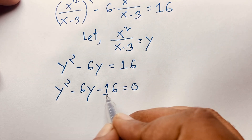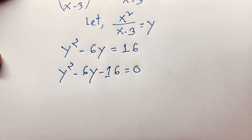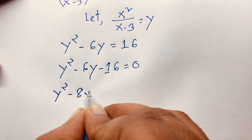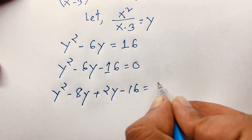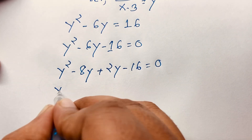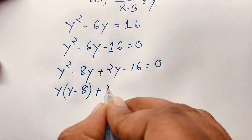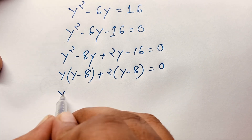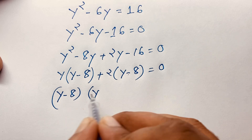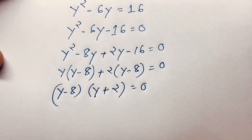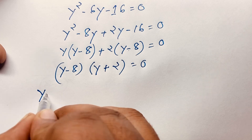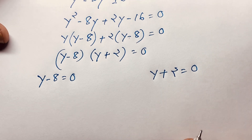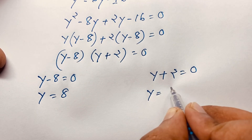Moving the 16 over gives negative 16. Now factoring by splitting the middle term: y² - 8y + 2y - 16 = 0. Then y is common, so y(y - 8) + 2(y - 8) = 0, giving (y - 8)(y + 2) = 0. So either y - 8 = 0, meaning y = 8, or y + 2 = 0, meaning y = -2.